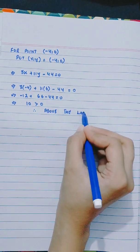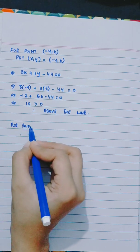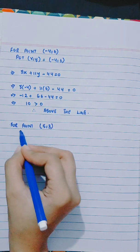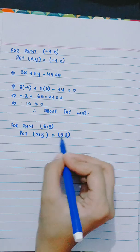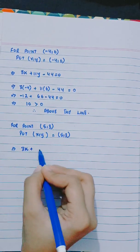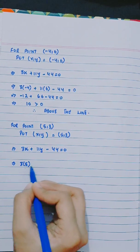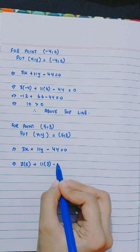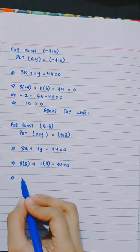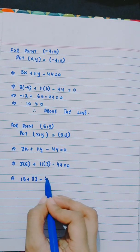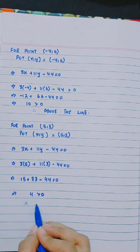For point (5,3), put x, y equals (5,3). 3x plus 11y minus 44 equals 0. 3 into 5 plus 11 into 3 minus 44 equals 0. 4 greater than 0, therefore above the line.